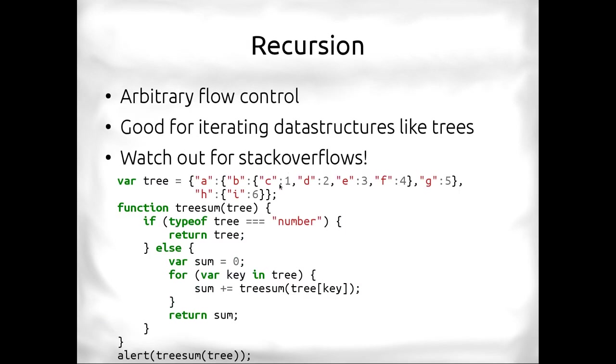We can then do recursion. Recursion is good for any kind of arbitrary flow control. You can implement a for loop in recursion, but it's good for iterating things like trees and data structures. Your only real issue with recursion is you might get a stack overflow if your VM or interpreter doesn't quite support tail calls.